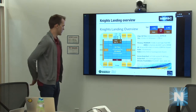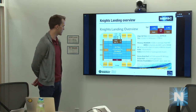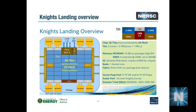This is a simplified diagram of the Knight's Landing chip. Knight's Corner used a ring to connect cores; Knight's Landing uses a 2D mesh. The MCDRAM is the on-package high-bandwidth memory — there are eight channels of MCDRAM and six channels of DDR4. The diagram shows 36 tiles, which would be 72 cores, but the part we actually have has 34 tiles.